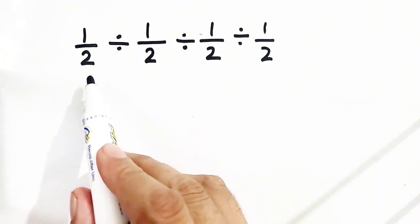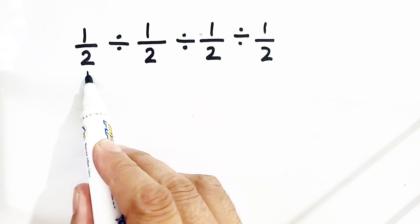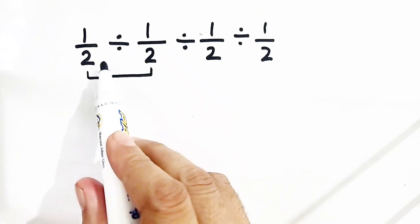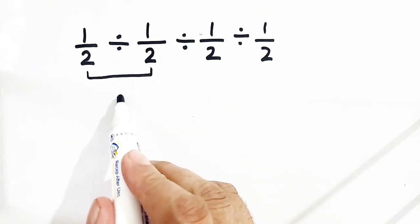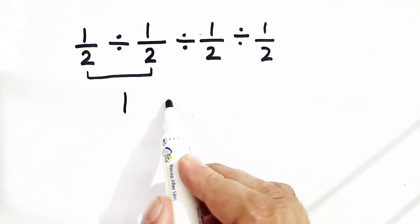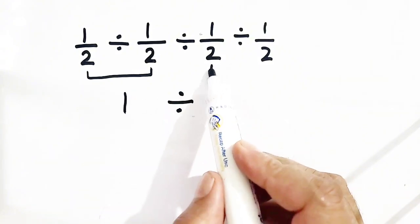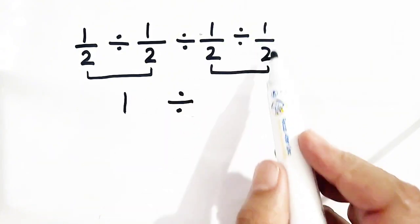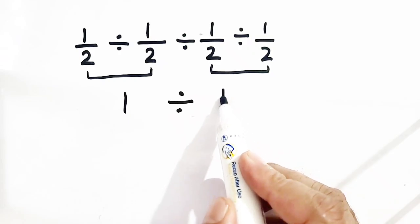Most of the people solved it in the way that 1 divided by 2 divided by 1 by 2. Their answer is 1 divided by 1 by 2 divided by 1 by 2. Its answer is 1.